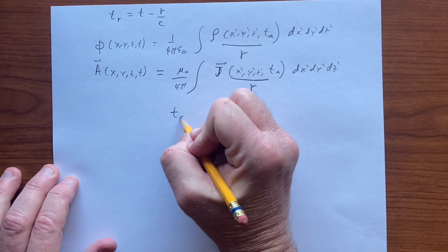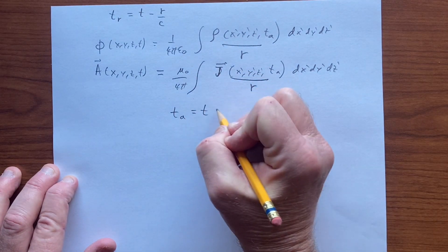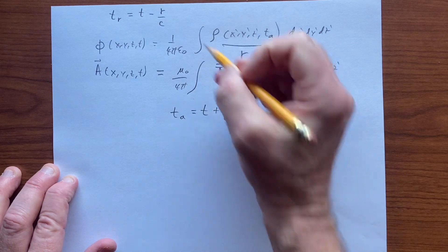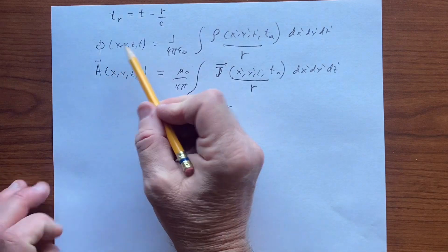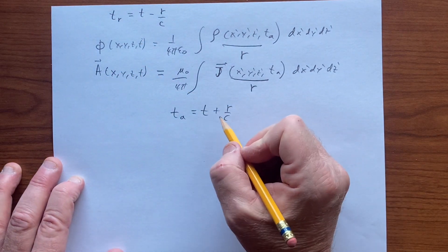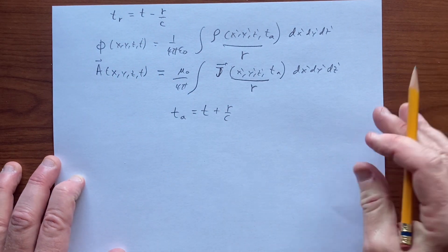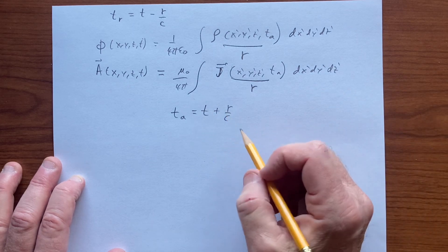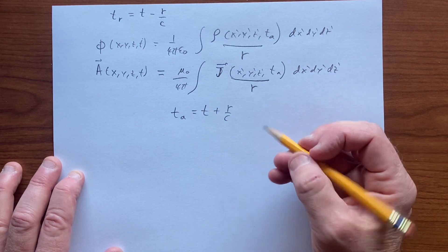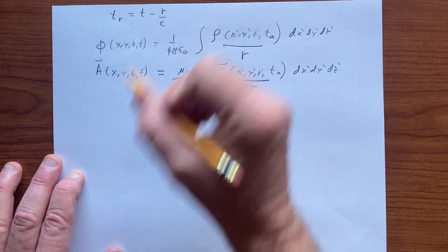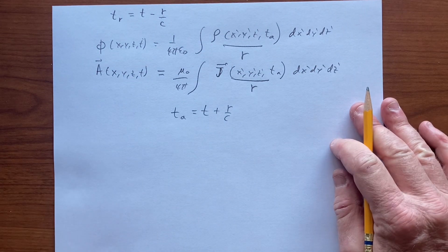And the solution is usually always ignored because t advanced is a later time, so we add this to time t, and the fields at time t are determined by that later time. That seems to violate causality, the idea that the effect precedes the cause is not something that we accept. We ignore the other solutions.